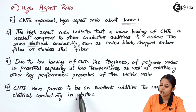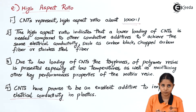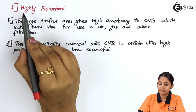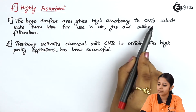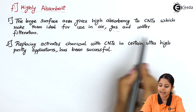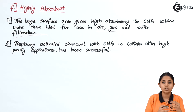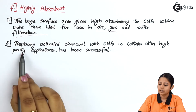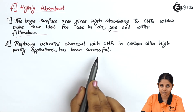Carbon nanotubes have been proven to be an excellent additive to impart electrical conductivity in plastics — adding a small amount to a non-conductive plastic makes it a conductive plastic. Another property is that carbon nanotubes are highly absorbent. Their large surface area makes them ideal for air, gas, or water filtration. Replacing activated charcoal with carbon nanotubes in certain ultra-high purity applications has been successful.